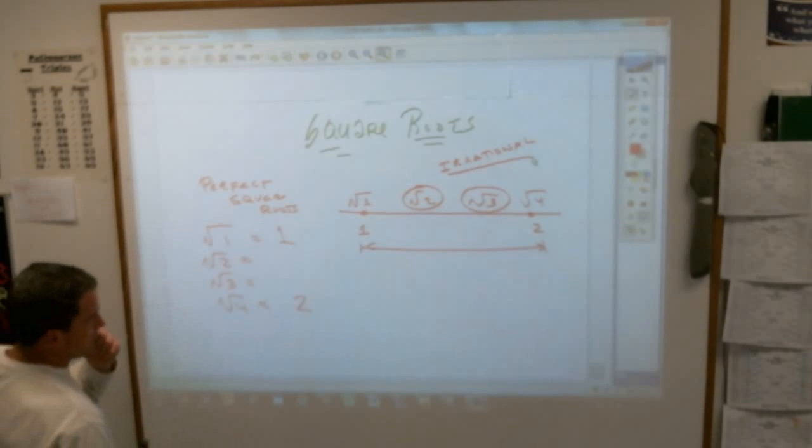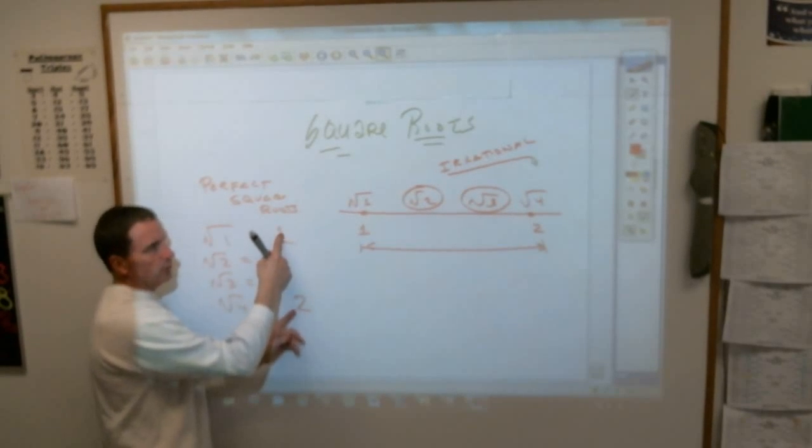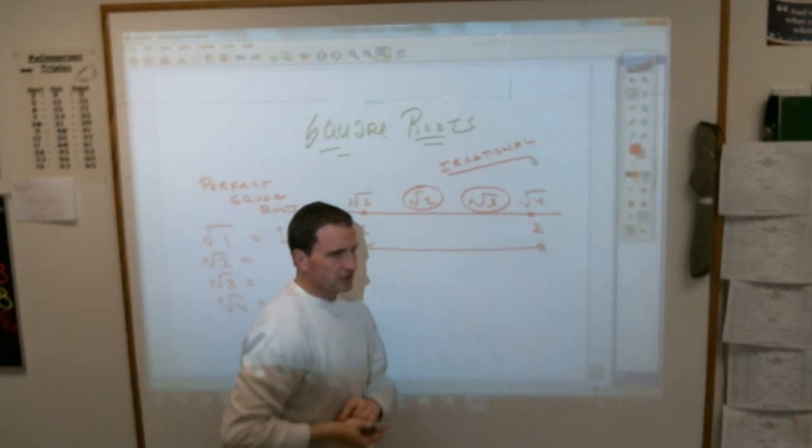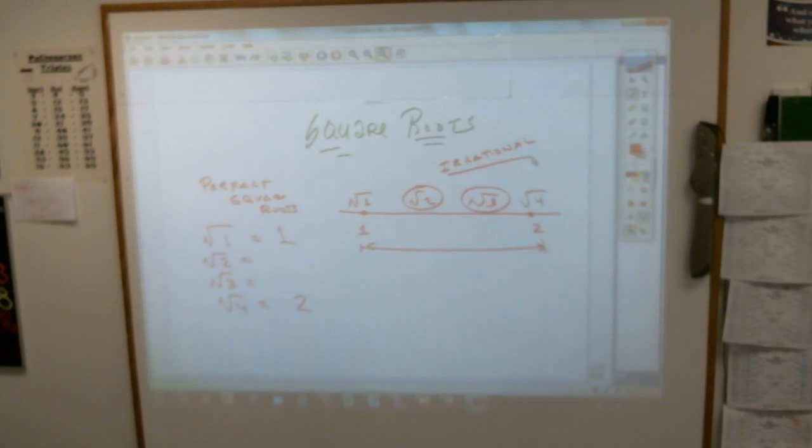Same thing with numbers. These two are rational because they work out to 1 and 2. These two here, ones that don't work out are irrational because if you type that into a calculator, you will end up getting a decimal that never ends. It's irrational. We can't even think of it because it never works out.